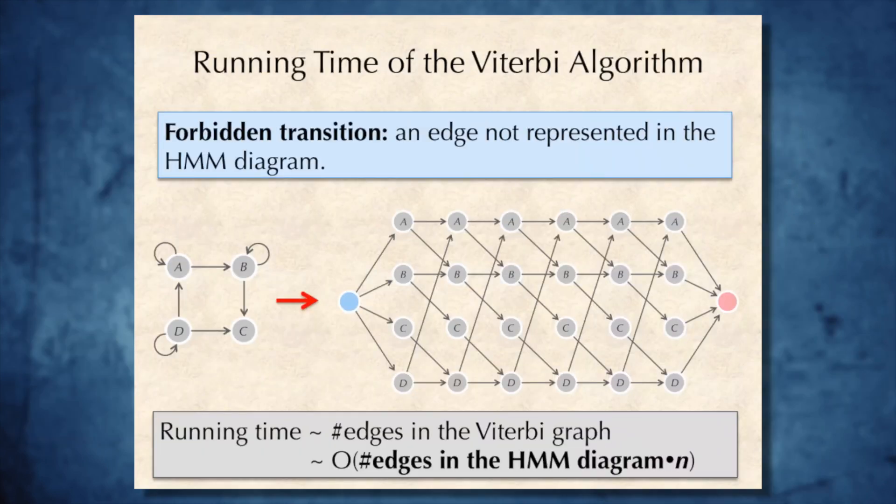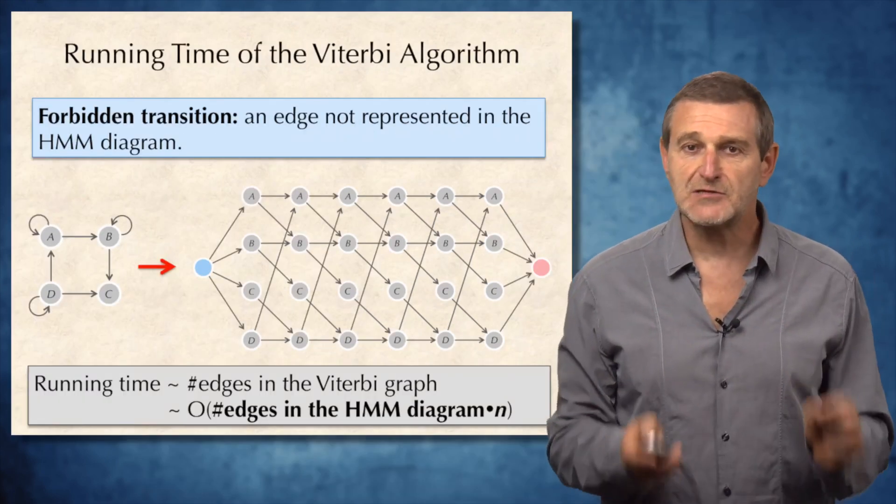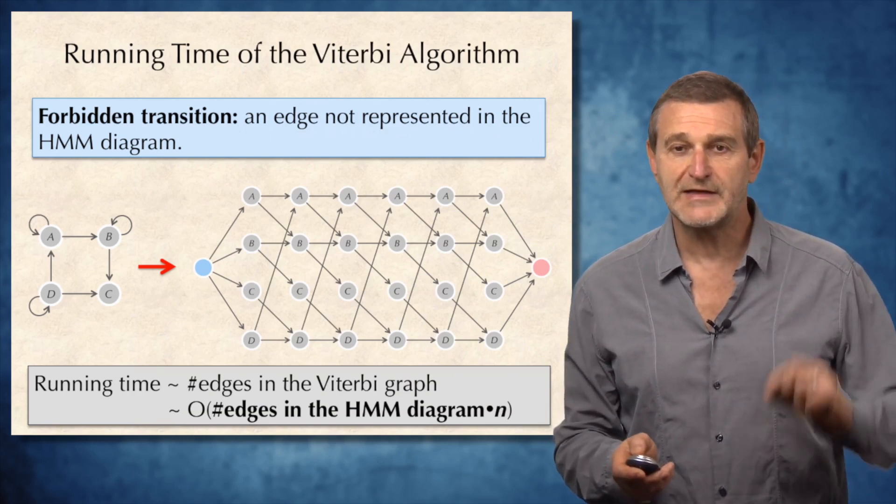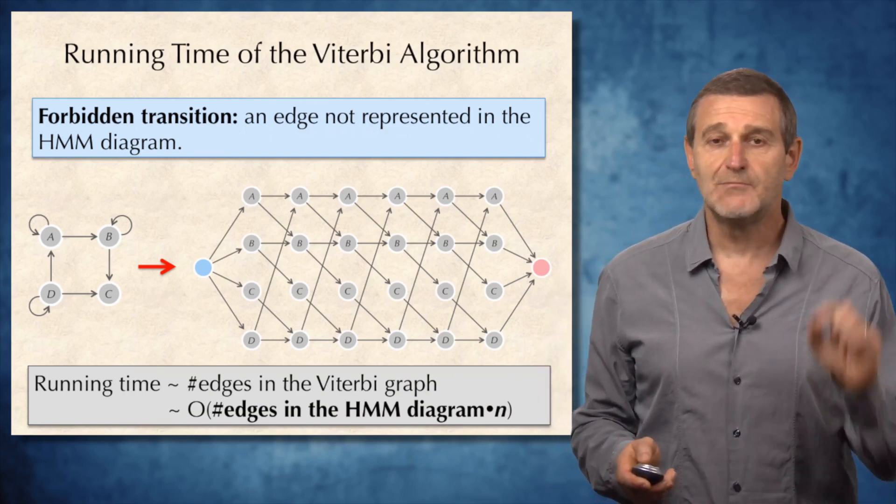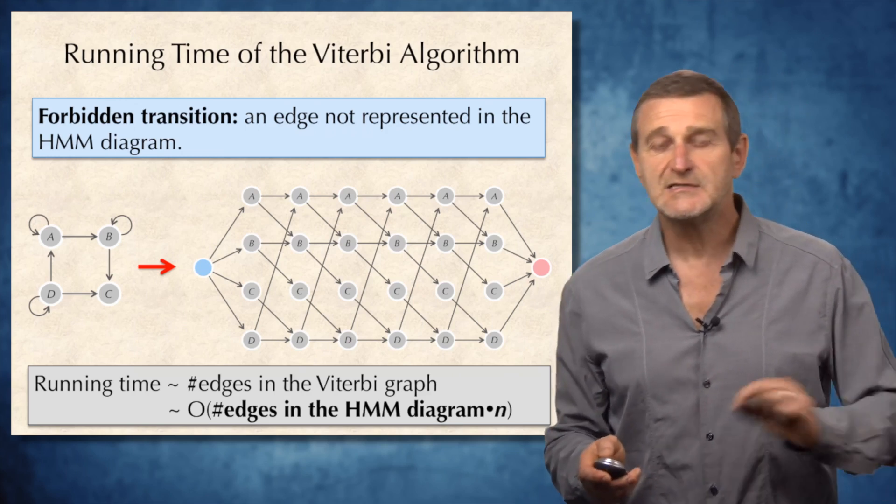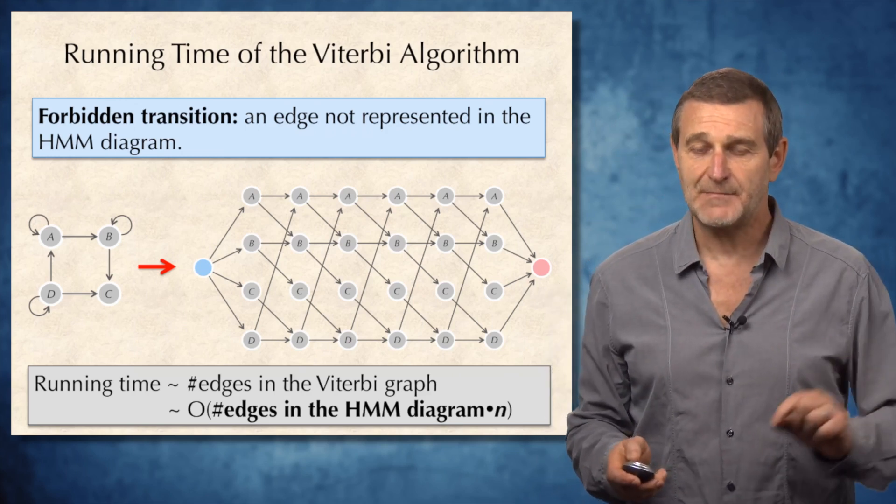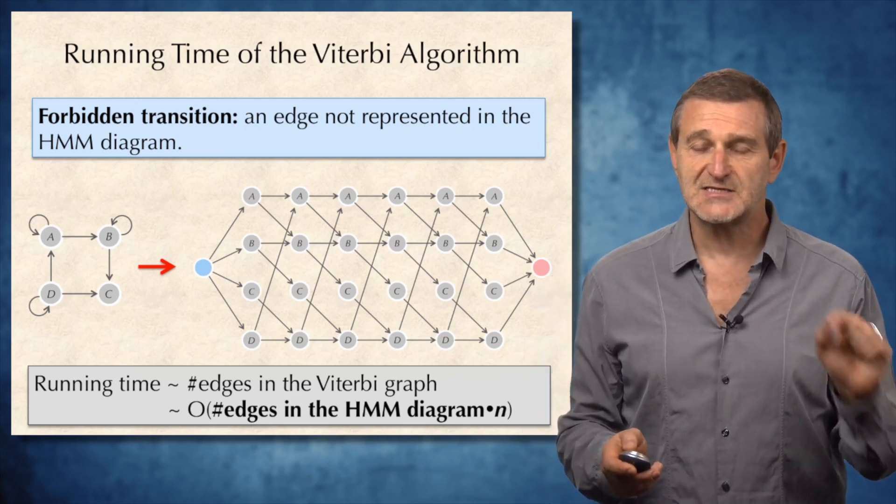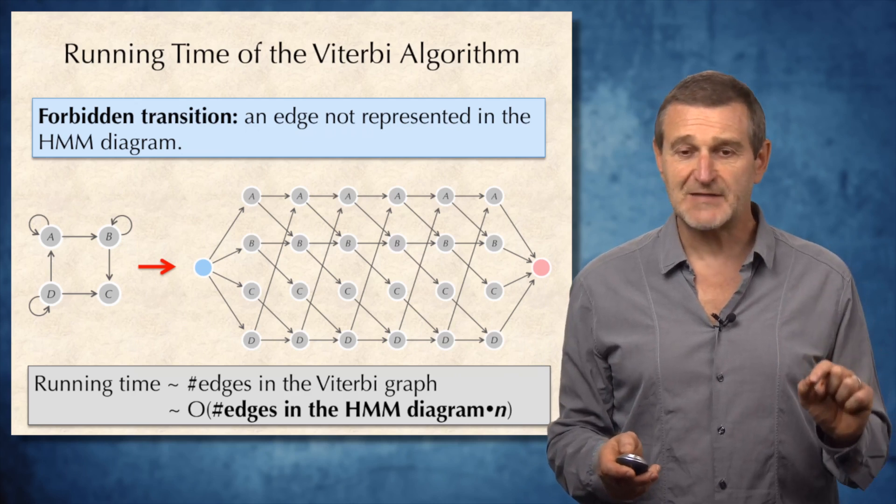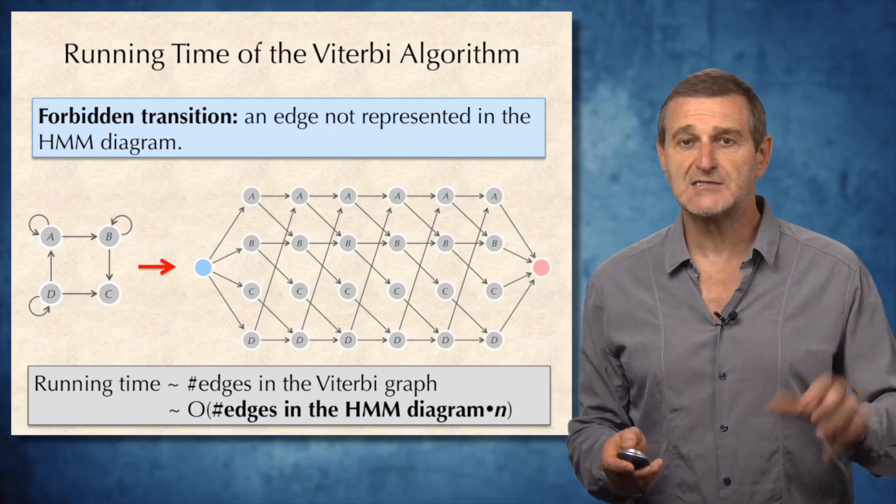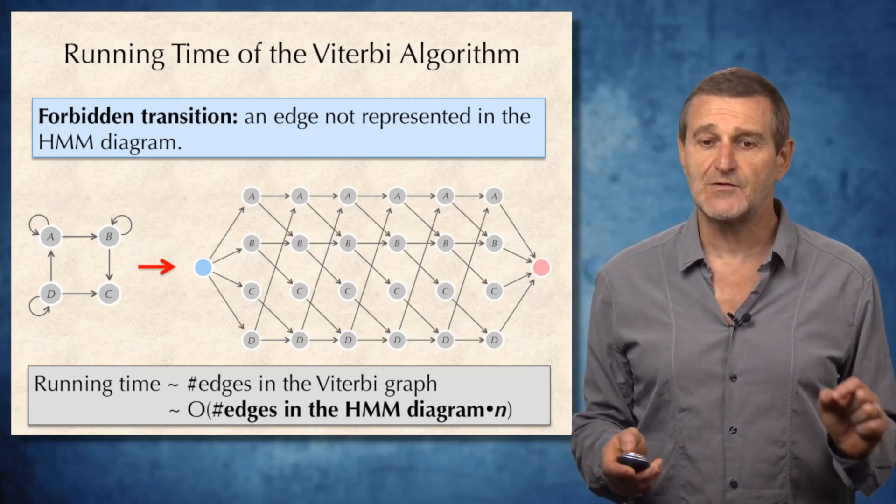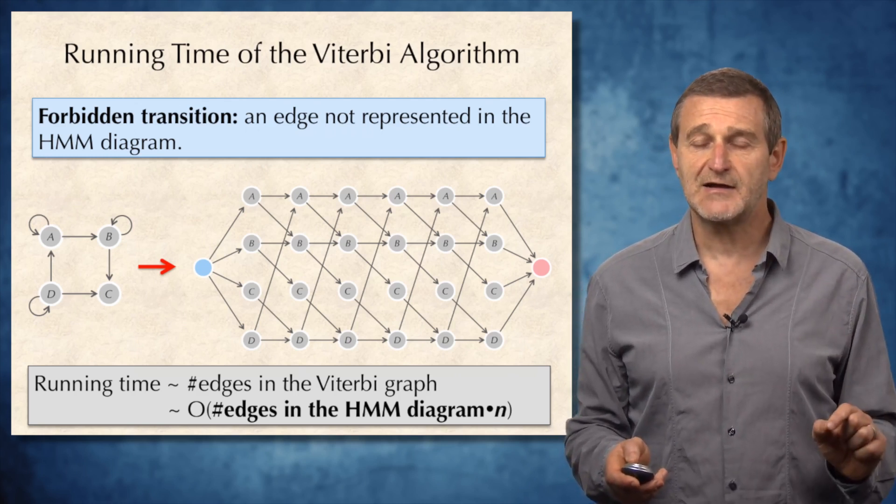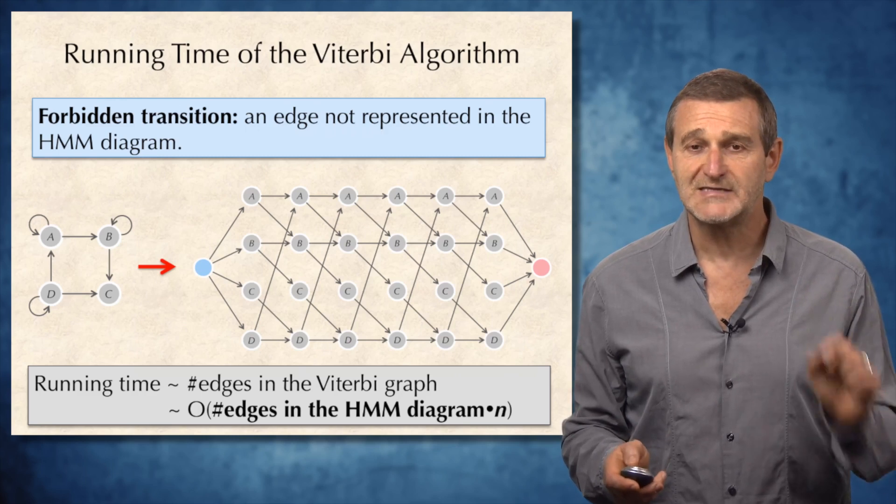Now, let's estimate the running time of the Viterbi algorithm in the case when HMM has forbidden transitions. Forbidden transition means that the probability of switching for a given pair of states is zero. For example, in this HMM diagram, there are four states, but you see that there is no edges connecting some states. They correspond to forbidden transitions in the HMM. You notice that the number of edges in this case, in the Viterbi's Manhattan, is smaller than for the case of the full HMM diagram, when all transitions are allowed. And in this case, the running time is, of course, number of edges in the HMM diagram multiplied by the number of emitted symbols n.